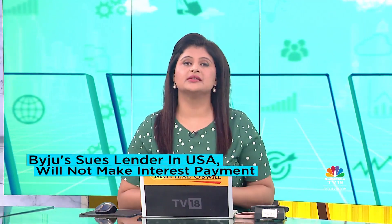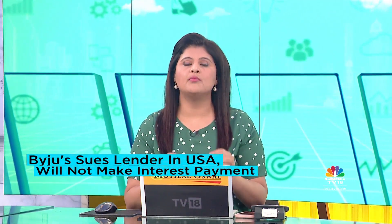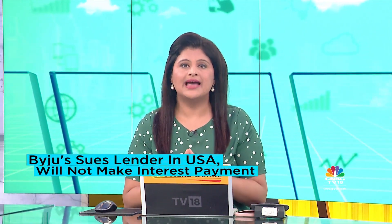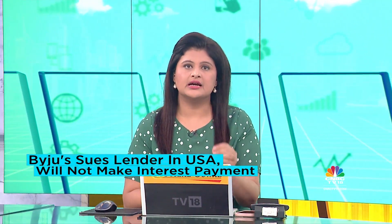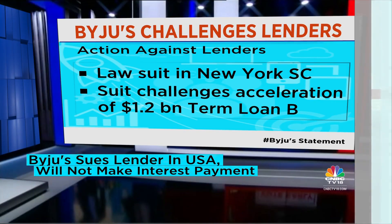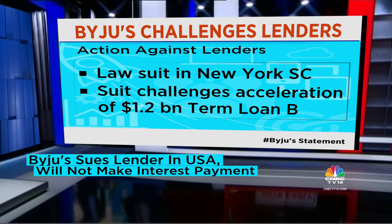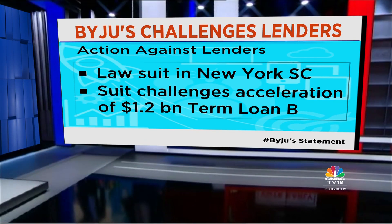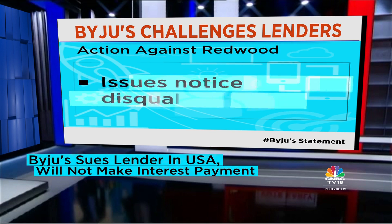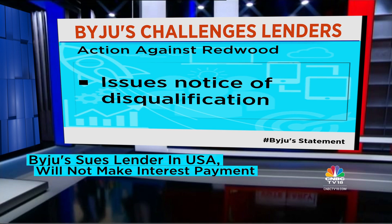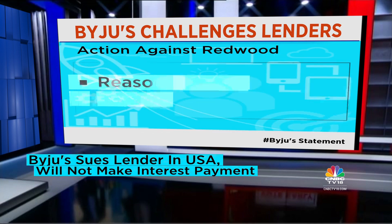The top story today: EdTech giant Byju's has filed a complaint in the New York Supreme Court to challenge the acceleration of the $1.2 billion term loan B and sought to disqualify investment management firm Redwood, which it alleges has conducted a series of predatory tactics. Byju's has alleged that Redwood purchased a significant portfolio of the loan while primarily trading in distressed debt with the intent of making windfall gains.